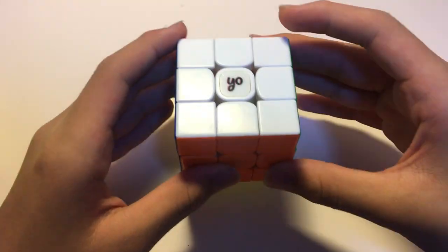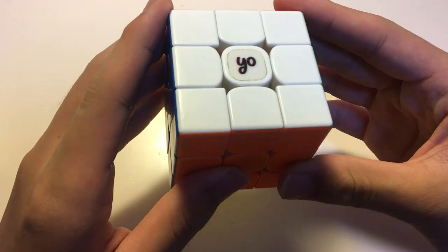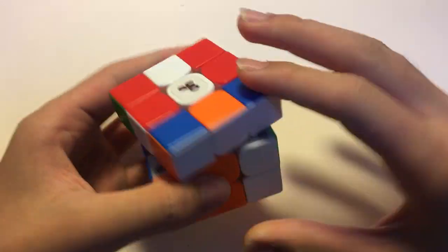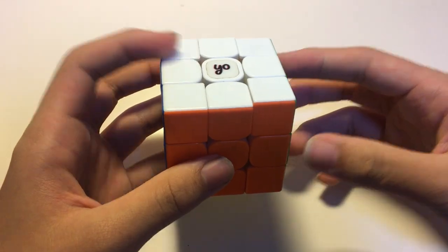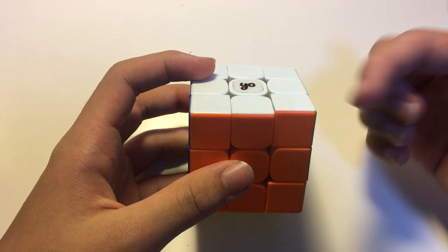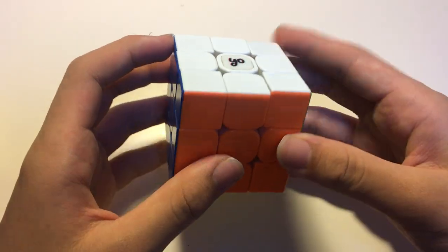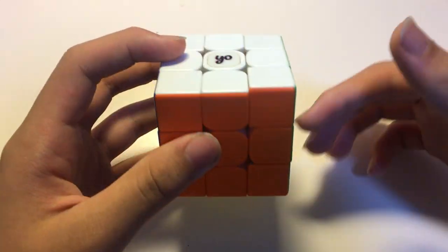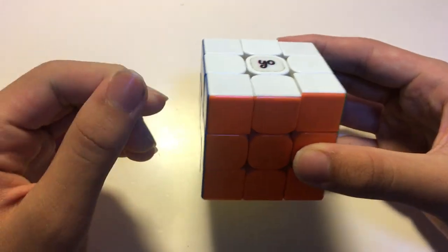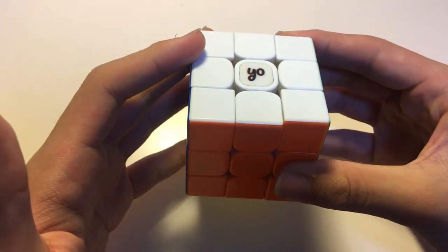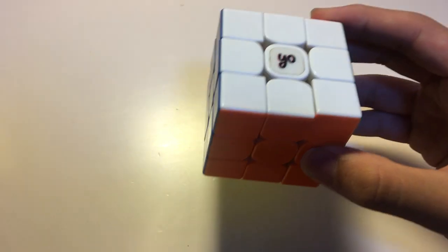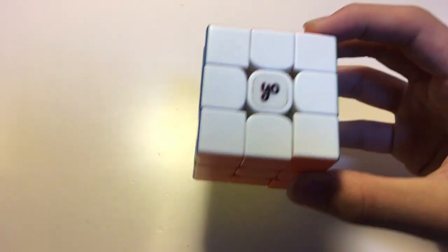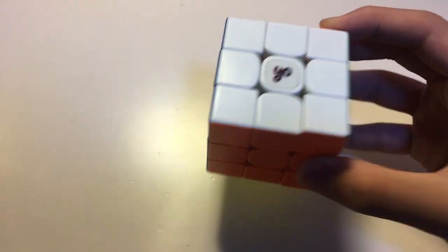So my main criticism about this cube is that it's too slow. Now, a lot of people might say, well, obviously it's slow, because there's a lot of lube in them, right? And you gotta break them in. And I did. I did a hundred solves on this cube. And it did not break in. It's still pretty slow. Out of the box, it was so slow. And after breaking it, it only got slightly faster, but it was slow. It was still pretty slow.